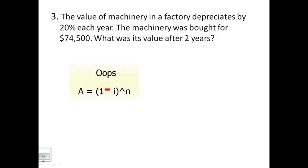Go ahead, for some reason I didn't change that formula. So that's 1 minus i to the n power. And if I go forward, I did calculate it correctly. I just didn't write it correctly. So that's 74,500 times 0.8 which is 1 minus i to the n. And that's to the second power. So I calculate that on my calculator or I can do it manually. In any case, I get $47,680.